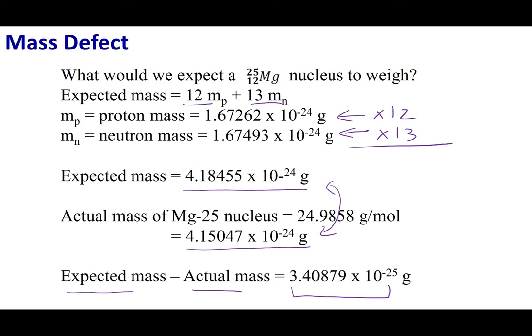To give you an analogy: you took a five-pound weight and added it to a six-pound weight, and instead of getting 11 pounds, you measured the combined weight and it turned out to be 10. This is what's called the mass defect — the sum of the parts do not equal the whole.